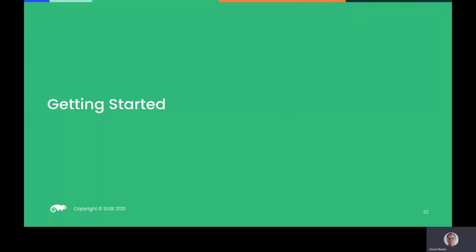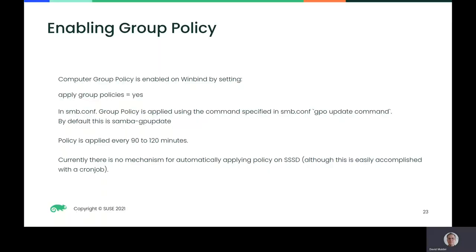Now that you know about the policies provided by Samba, you're probably wondering how to get started using Samba Group Policy. Computer group policy can be applied in WinBind by setting the Apply Group Policy setting to Yes in your SMB.conf. Group policy is applied using the command specified in SMB.conf GPO Update command, which is the Samba GPO Update command by default. Policies are applied every 90 to 120 minutes — the same interval used on Windows clients — with the random interval preventing all clients from fetching policies simultaneously. Currently, there's no mechanism for automatically applying policy on SSSD, but you could accomplish this using a cron job.